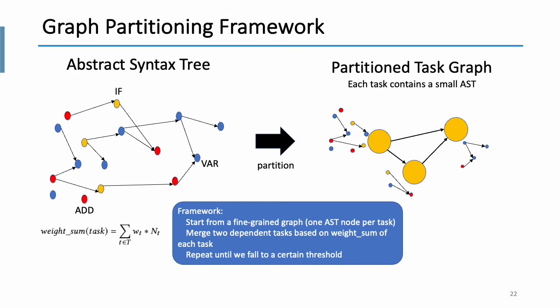So first, GPU-aware partitioning. Right now, we have an AST, but the AST is too fine-grained. We need to partition it to a coarse graph, which is also called partitioning task graph. So the framework will be like this. Start from a fine-grained graph, let's say one AST node per task. We try to merge two dependent tasks based on weight sum of each task. So given two merged tasks, we try to compute the weight sum of all RTL nodes in the task, and use it to produce a new task. In the weight sum function, Wt is the weight of an RTL node t, and nt is the number of RTL node t in the given task. And we will repeat until we fall into a certain threshold to finish the partitioning algorithm.